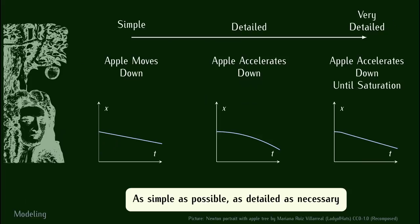Si on prend un peu plus de recul pour modéliser — imaginez votre ami Newton, on coupe la pomme qui est au-dessus de lui et on se demande ce qui va se passer. On peut utiliser différents niveaux de détails. D'un niveau très simple jusqu'à un niveau très détaillé. Niveau très simple : la pomme tombe. On fait juste une ligne qui descend à vitesse constante. C'est une observation qu'on peut faire rapidement sans faire de mesure.